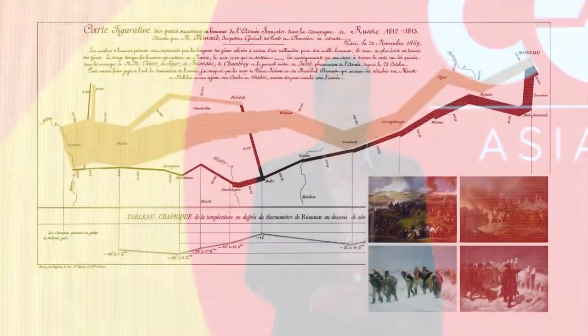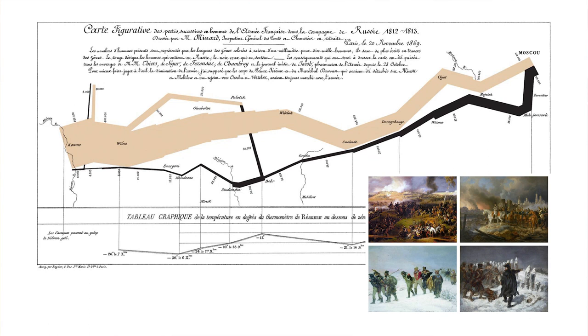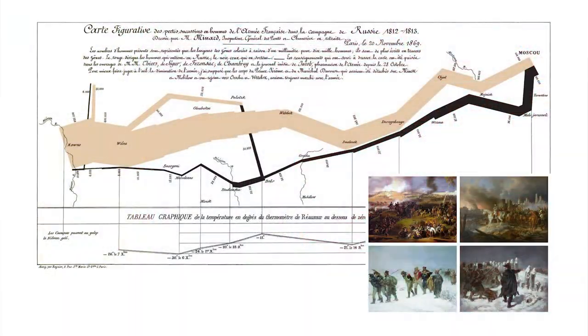Could anybody identify what this picture is? This is a reasonably famous visualization. If you learn UX visualization, this is one of the pictures used in class. It depicts the invasion of Napoleon. Napoleon is one of the French emperors who invaded Russia, and this visualization shows that invasion.